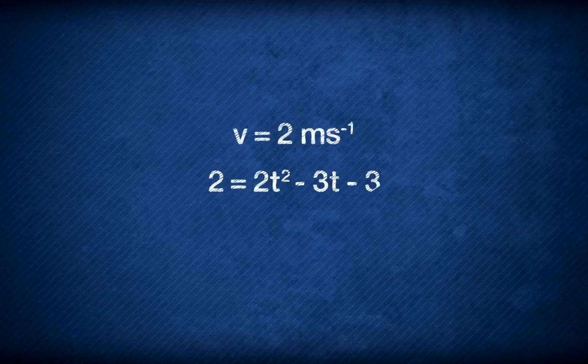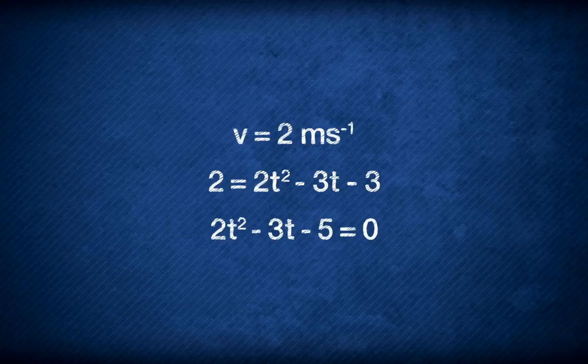Now let's use Casio ClassWise to check your answer. Once we have substituted v as 2 into the function of velocity and simplified the equation as 2t squared minus 3t minus 5 equals 0, we can then use the equation mode of the calculator to solve this quadratic equation.